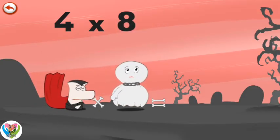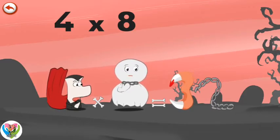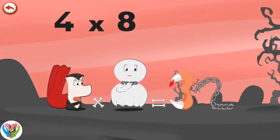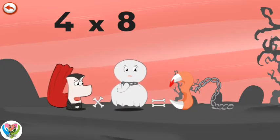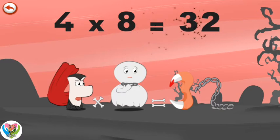Until suddenly, the chain breaks. The vampire's teeth in the shape of a three are pulled out by the piece of chain in the shape of a two. Four times eight is thirty-two.